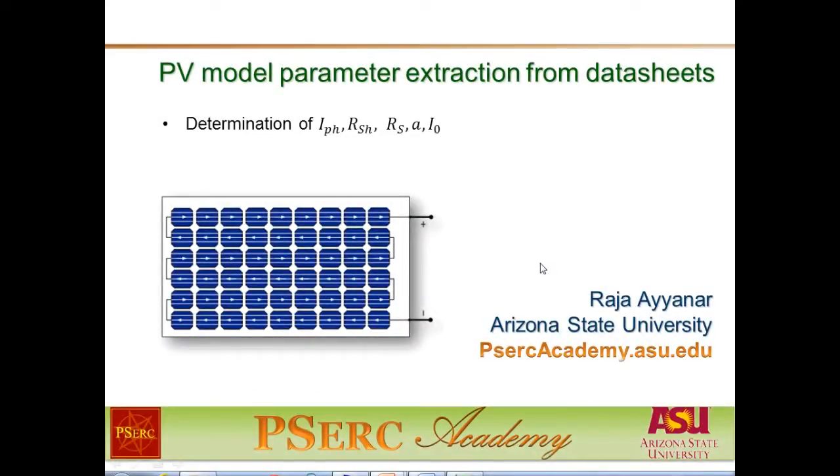In previous videos, we have developed the circuit model for PV cells. These models require several parameters that are characteristic of the particular cell being modeled. Specifically, we need the photon current IPH, the two resistances R-shunt and R-series, the diode non-ideality or the diode ideality factor A, and the reverse saturation current I0.